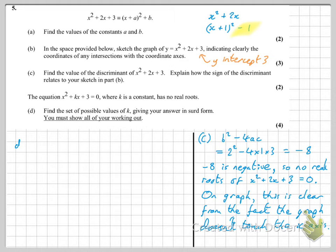And then part D, we're given a new equation, similar but different. We're told it has no real roots, so the discriminant must be negative.